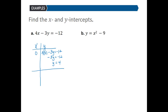Then if we let y equal zero and solve for x, we get 4 times x minus 3 times 0 is equal to negative 12. So 4x equals negative 12. Dividing by 4 gives us x equals negative 3. So the x-intercept is (negative 3, 0) and the y-intercept is (0, 4).